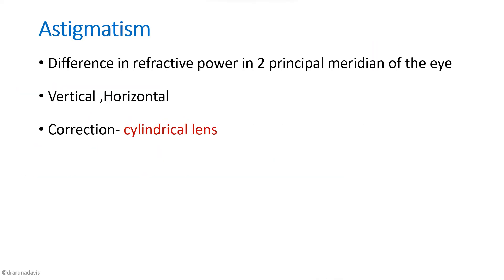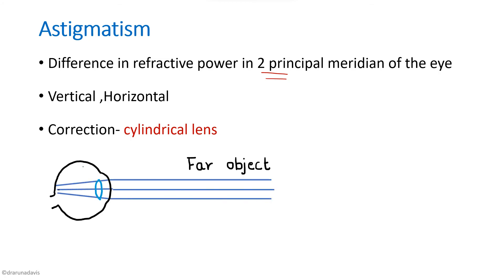Next is astigmatism. In astigmatism, there is a difference in the refractive power in the two principal meridians of the eye — meaning refractive power differs in different meridians, either vertical or horizontal. It is corrected by a cylindrical lens. For a far object in an astigmatic eye, light is brought to focus at different points, having different focal points on the retina. This is corrected with a cylindrical lens.